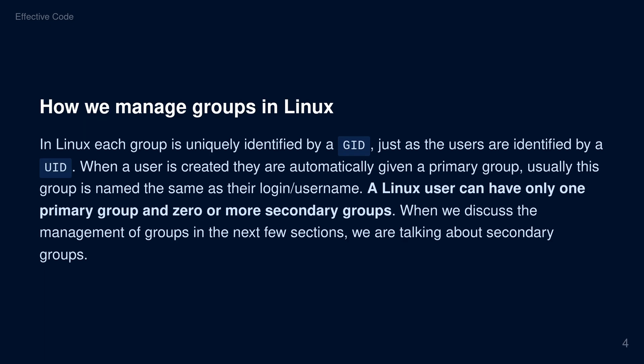How we manage groups in Linux. In Linux, each group is uniquely identified by a GID, just as users are identified by a UID. When a user is created, they are automatically given a primary group. Usually, this group is named the same as their login or username. A Linux user can only have one primary group and zero or more secondary groups. When we discuss the management of groups in the next few sections, we are talking about secondary groups.